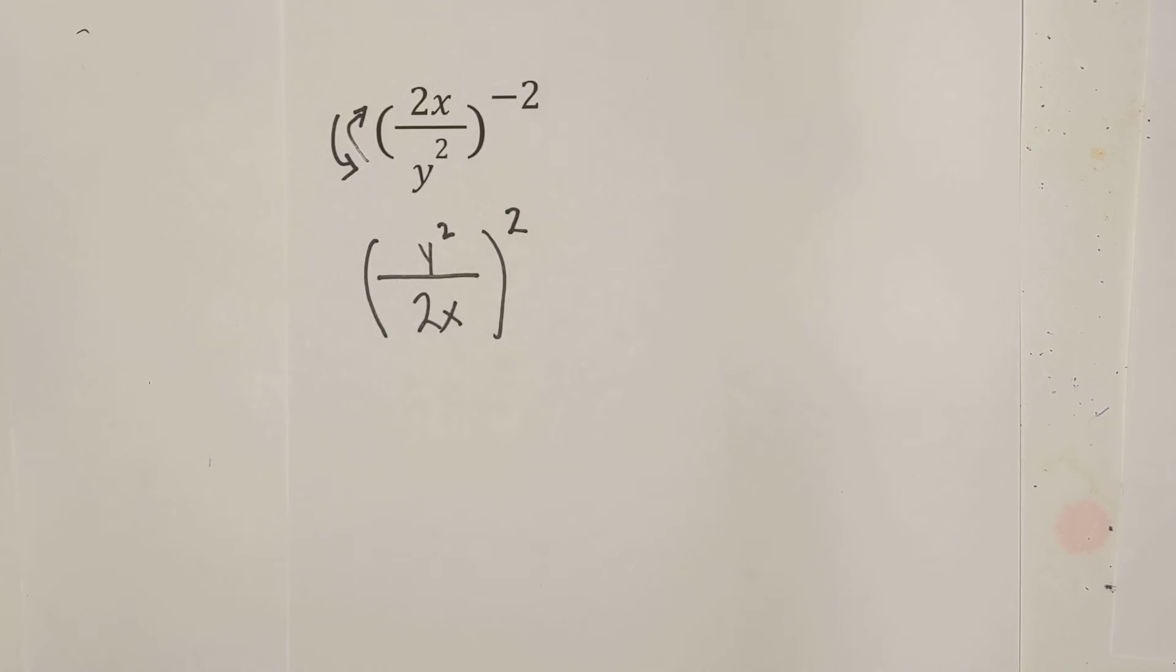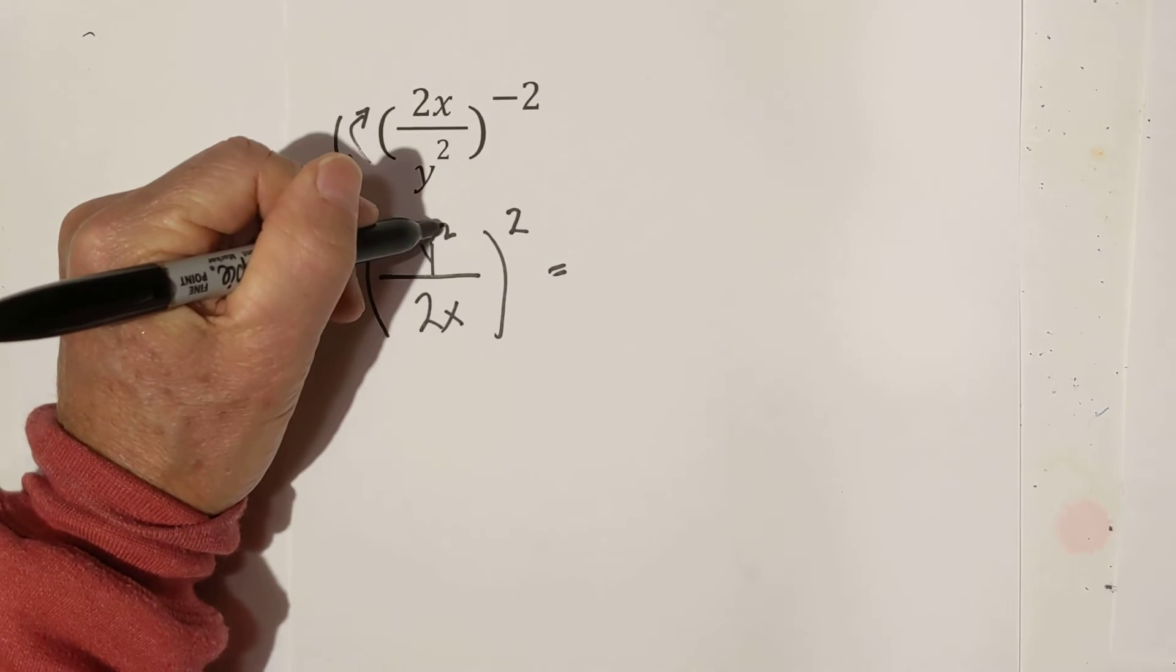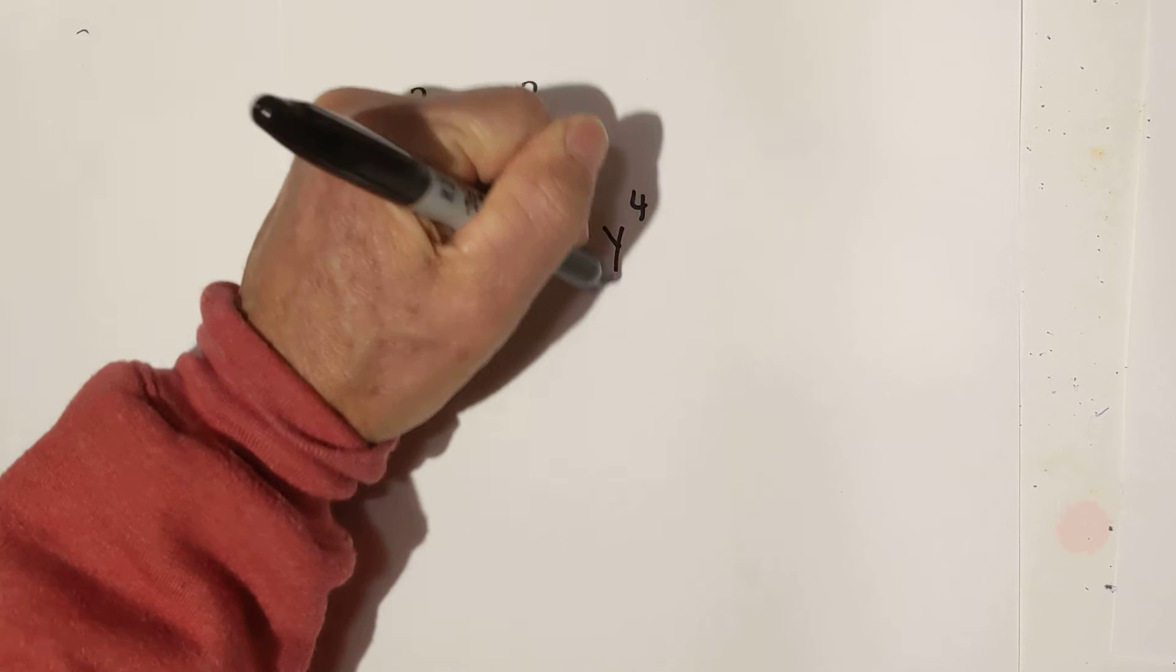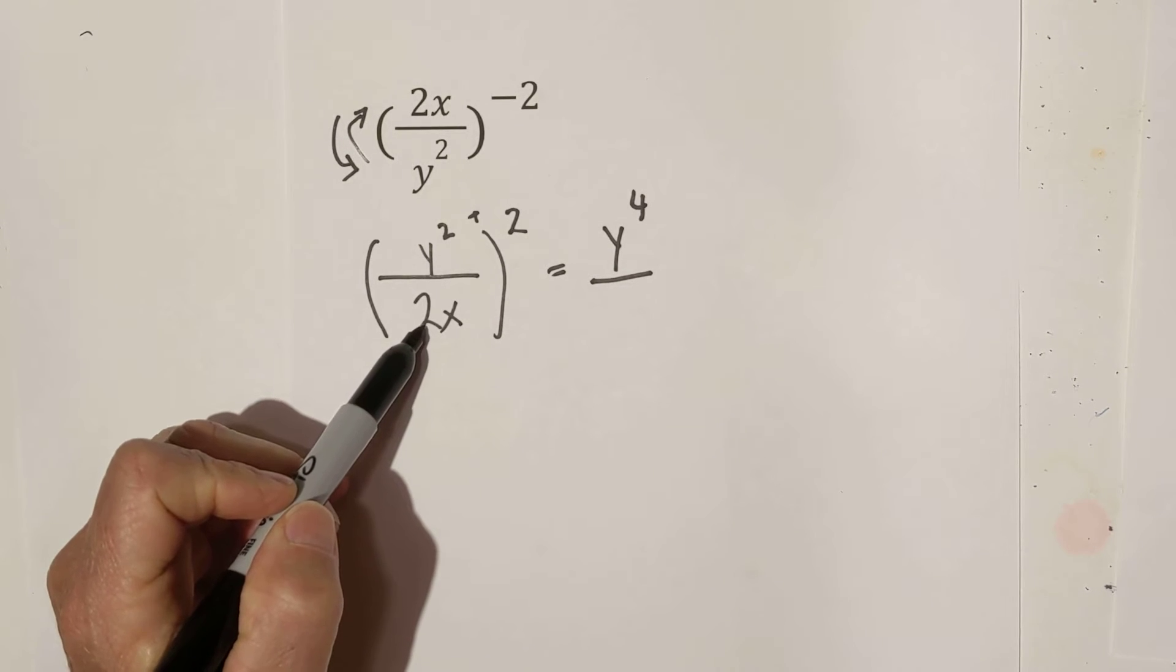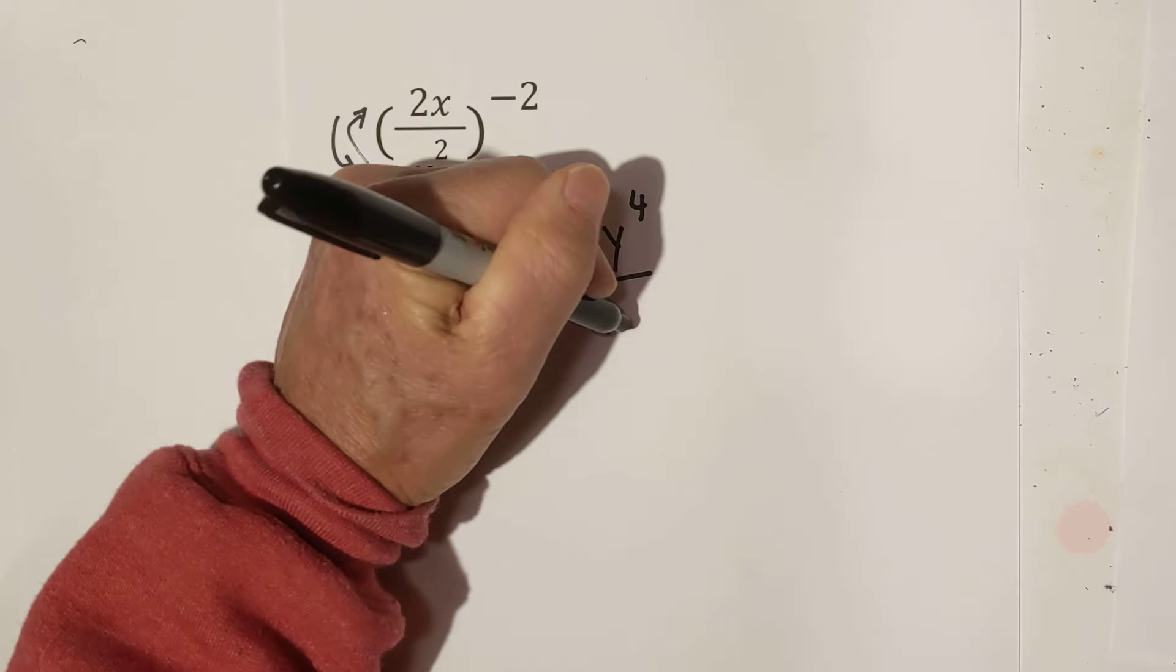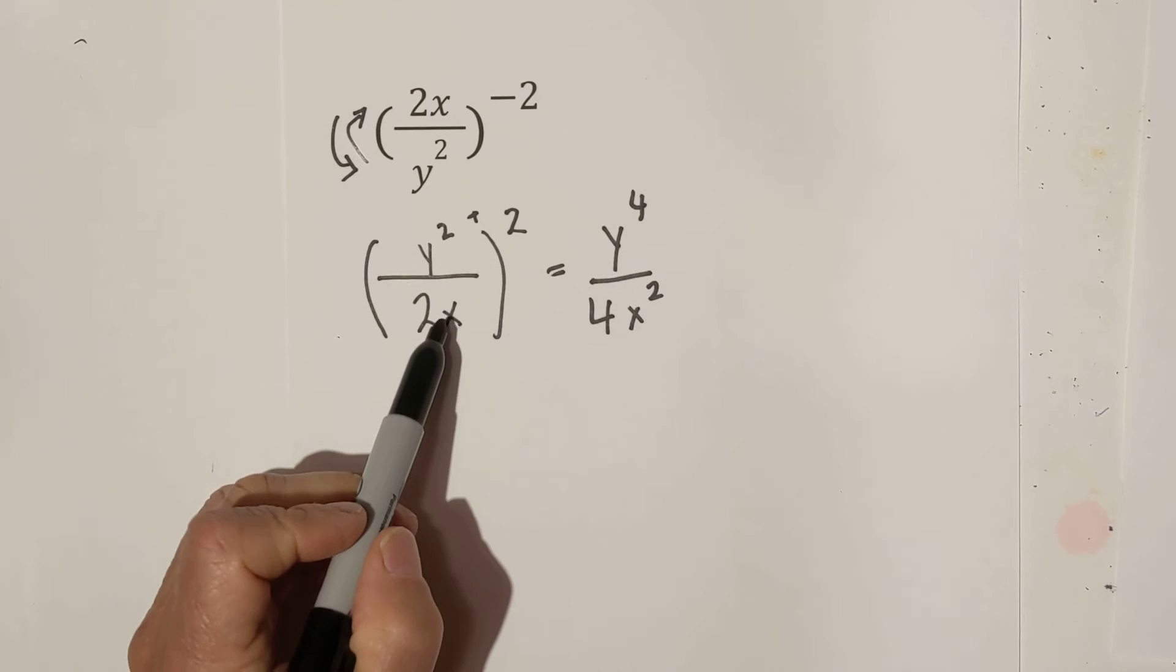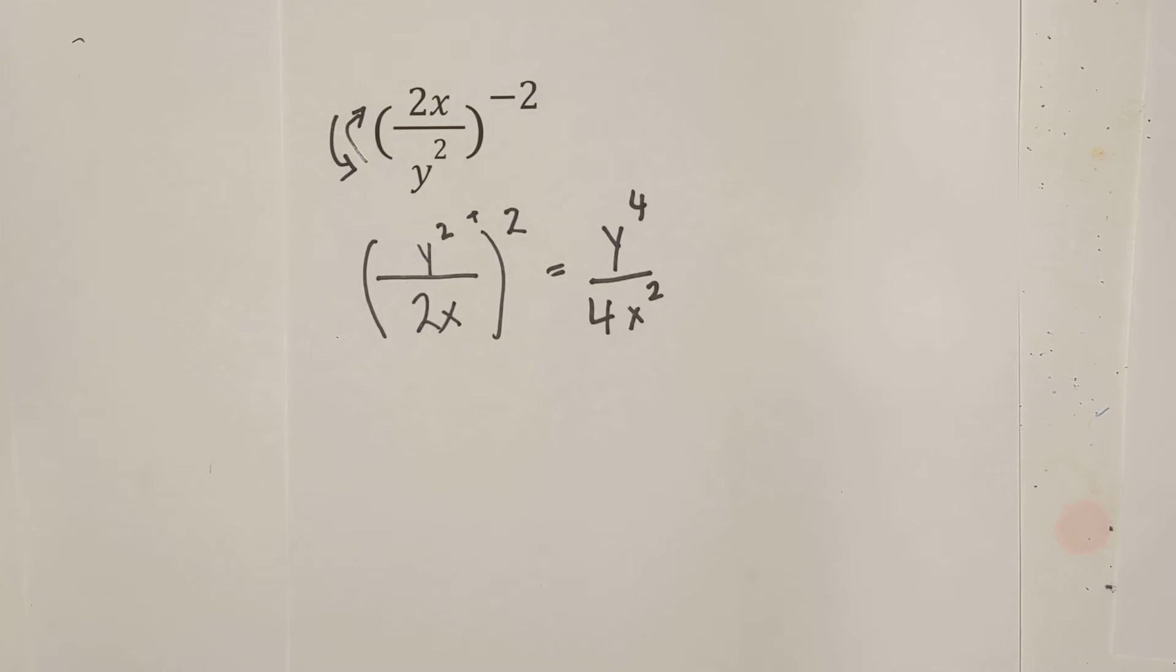So we rewrite it to look like this. Now we just apply the rules. y squared, we add these. So we have y to the fourth over. Now the 2, it's actually squared. It's not 2 times 2, it's squared, but it just so happens 2 squared is 4. And then we have x squared, okay, because you add it to the x. So there's example 1.